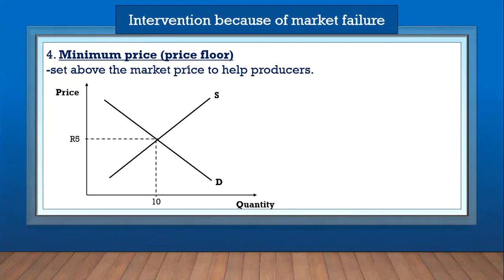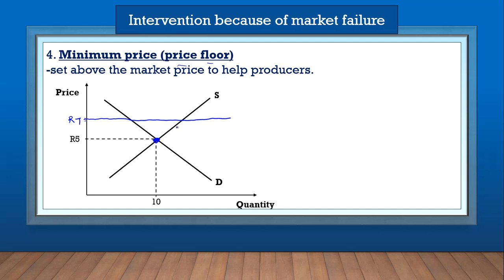Now let's look at a minimum price, also called the price floor. This price is set above the market price to help producers. Let's say the market decides that carrots should be sold at five rands for a given quantity, but producers will not be able to make profits if they sell at that market price. So the government can introduce a minimum price above the market price — let's say it's seven rands — and no one can sell carrots for less than seven rands.